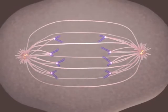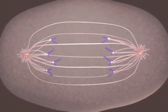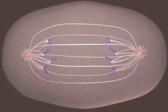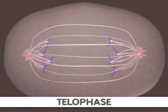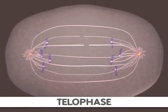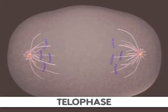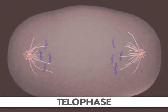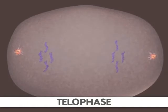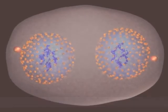Telophase is the final stage of mitosis. It is here the components of the new cells begin to appear. At this point, the spindle fibers are broken up. A new nuclear membrane surrounds the chromosomes at the end of each cell, and the chromosomes uncoil and return to an uncondensed state. Mitosis is now complete.